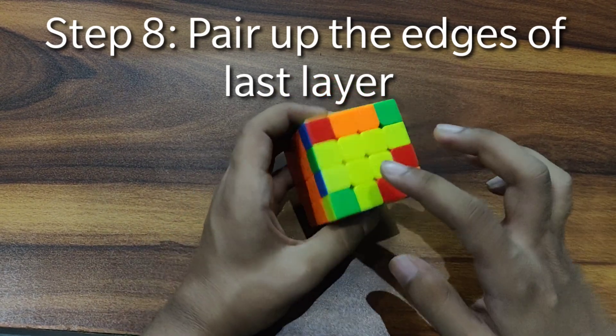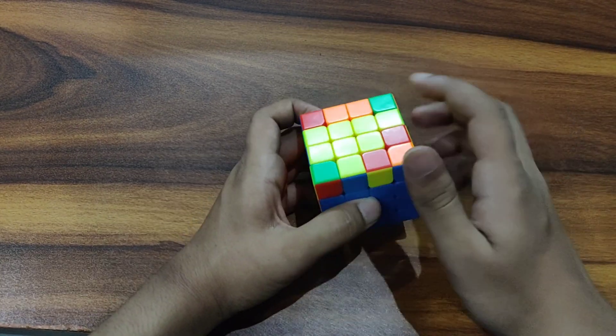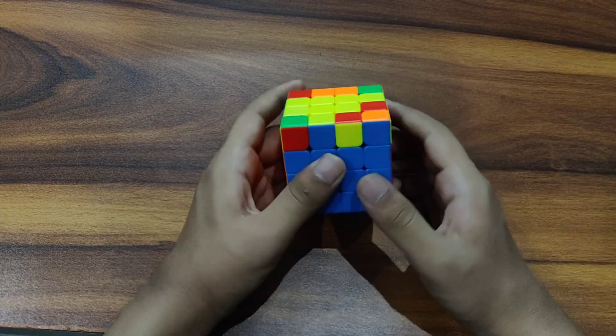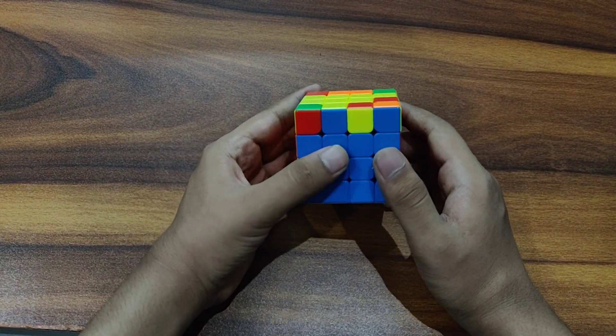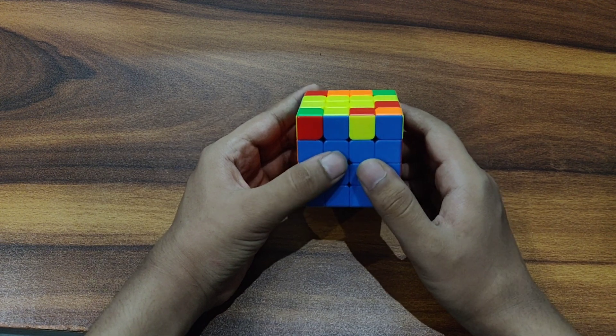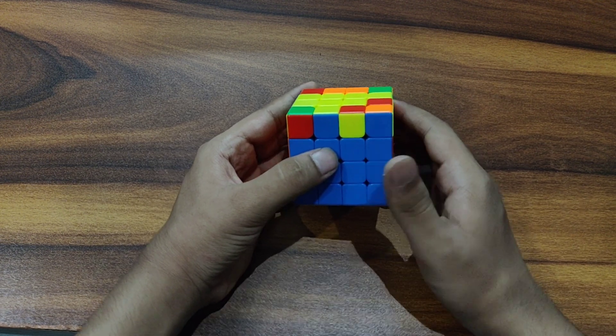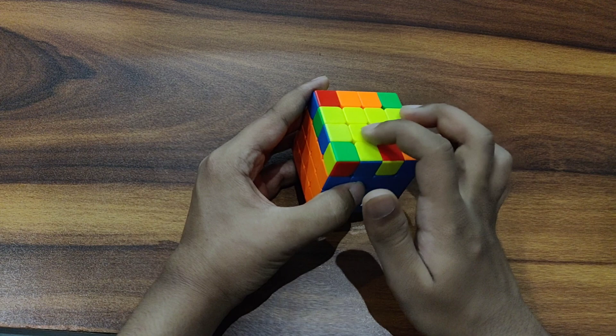So in the last layer, the first step is to solve the edges, to pair them up. This one is paired, so you have to solve the rest of them. So here's the algorithm, the last two algorithms from Yau which I know. So we can use it to pair these three edges.